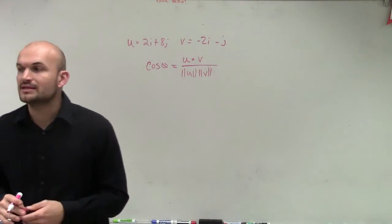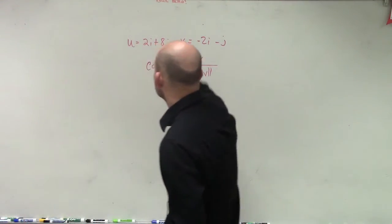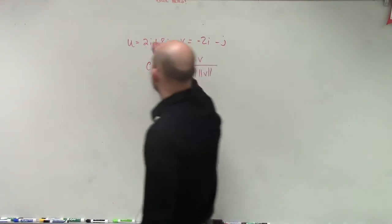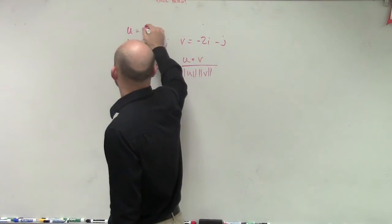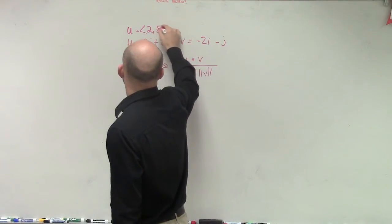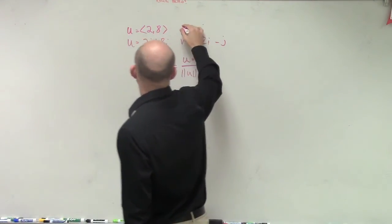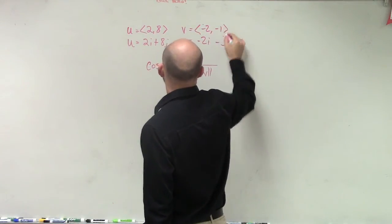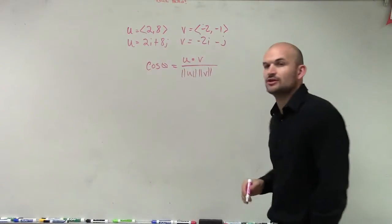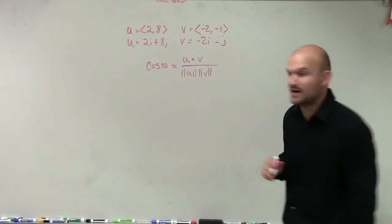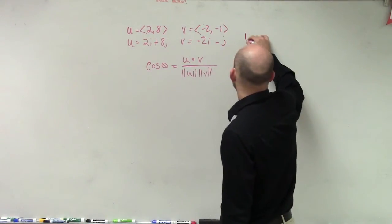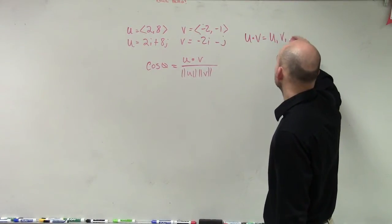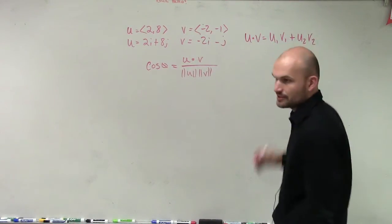What I need to do is compute the dot product of u dot v. You could rewrite these in component form: u as 2 comma 8, and v as negative 2 comma negative 1. The dot product formula is u1 times v1 plus u2 times v2.